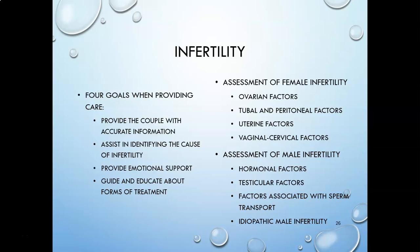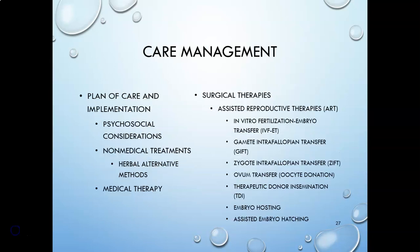Usually the first thing done when assessing infertility is a semen analysis — it's easier to obtain and cheaper, and can identify causative factors. We're not going to go into super detail about infertility, but the most common factor is obesity.